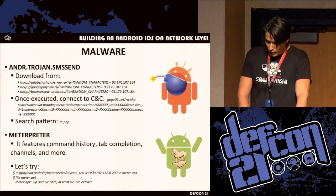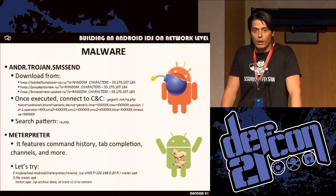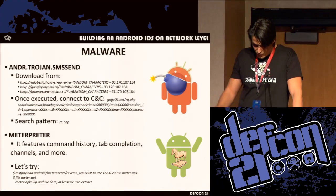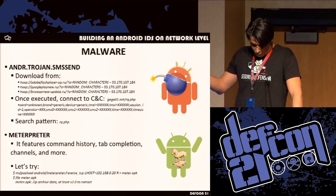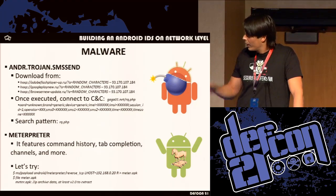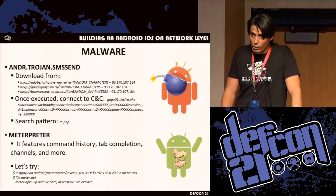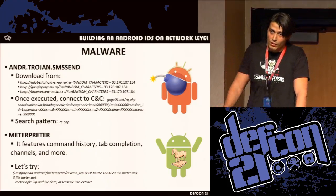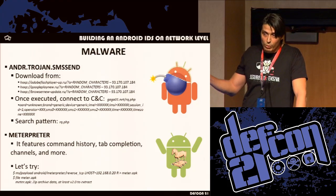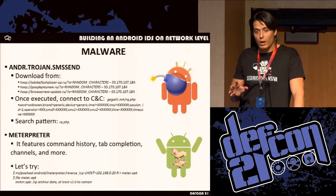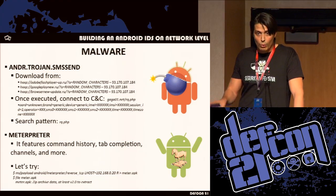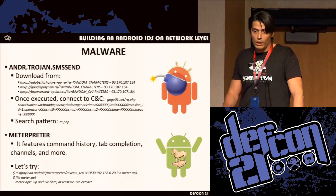The last thing I wanted to address was malware. There is a lot of malware for Android, and almost every malware has a pattern. I searched for patterns — in this case, the SMS sender malware. You can download it, and when downloaded it connects to a command-and-control server. You can find the string it uses to connect to the remote server — the string to match in packets is 'rq.php.' If we have the pattern the malware is using, we can detect almost every malware sample, and not only detect it but also drop all the outgoing traffic it is sending.